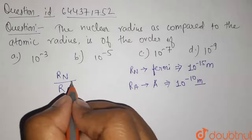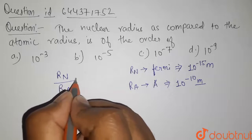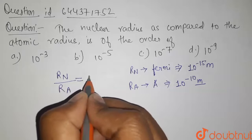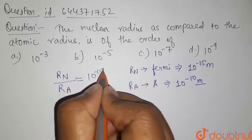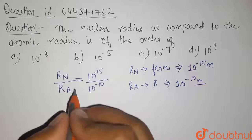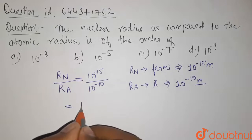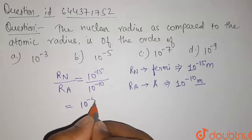The ratio of nuclear radius to atomic radius equals 10 to the power minus 15 divided by 10 to the power minus 10. Calculating this gives us 10 to the power minus 5.